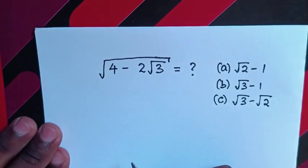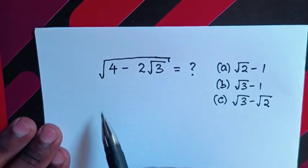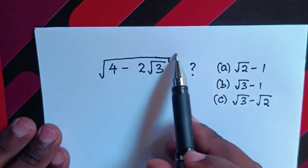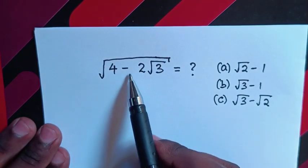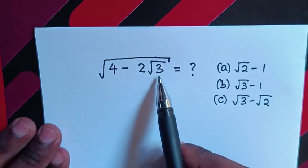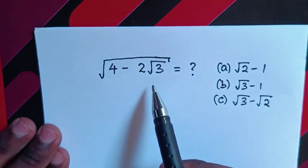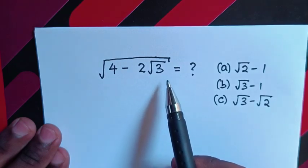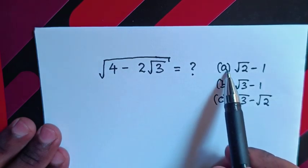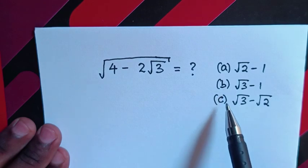Hello. How to find the value of square root of 4 minus 2 square root of 3, and choose between the answers a, b, and c?